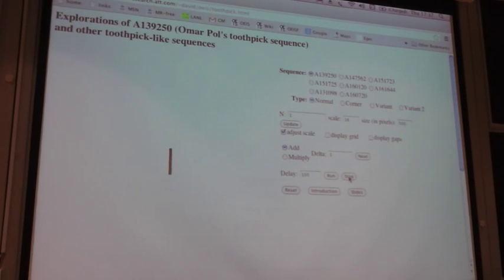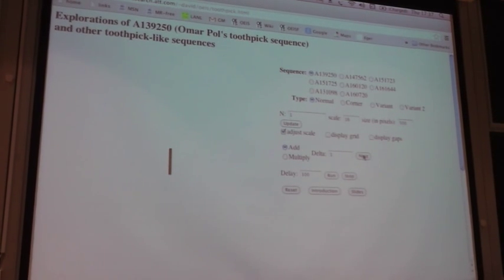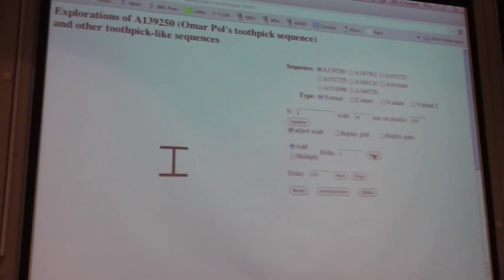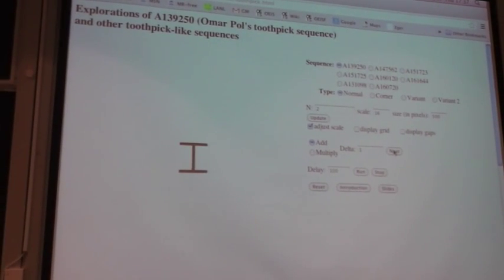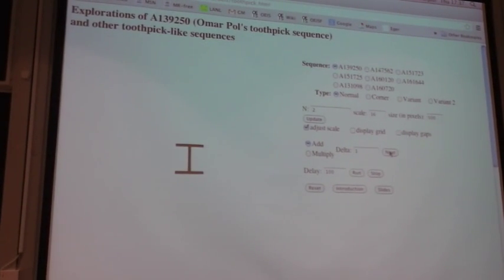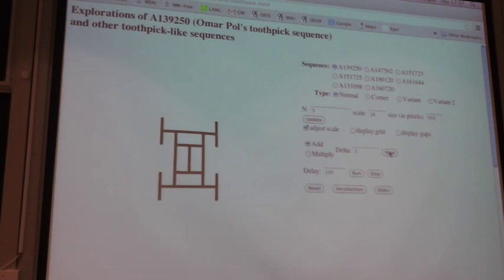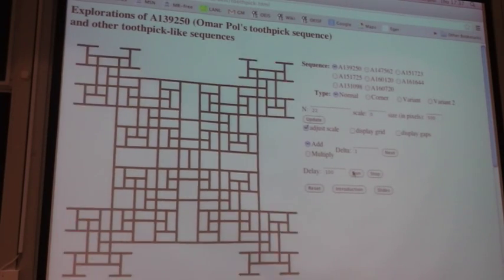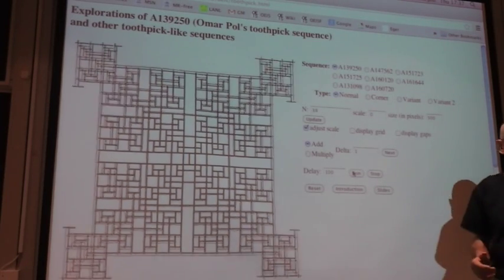And the sequence is how many toothpicks are there? So we're going to add two toothpicks. Now that configuration there has four free ends. So we're going to add four toothpicks. Now we've got four free ends. And we add four more. Now we've got four free ends. And we add four more. Now we've got eight ends. So the question is, how many toothpicks are there at the nth generation? And if you let it run, it gets bigger and bigger. And it looks like this.